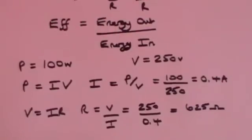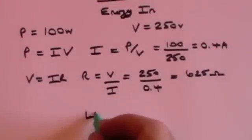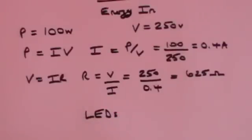By contrast, light-emitting diodes, which we came across in an earlier video on this electricity series, are much more efficient because much more of the power, much more of the energy, goes to providing light, and hardly any goes to providing heat.